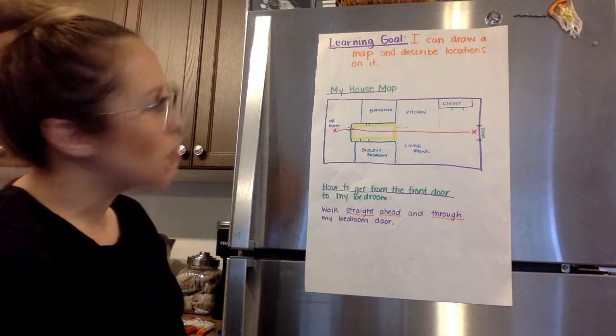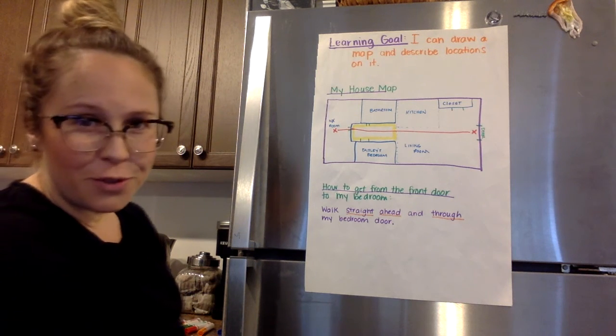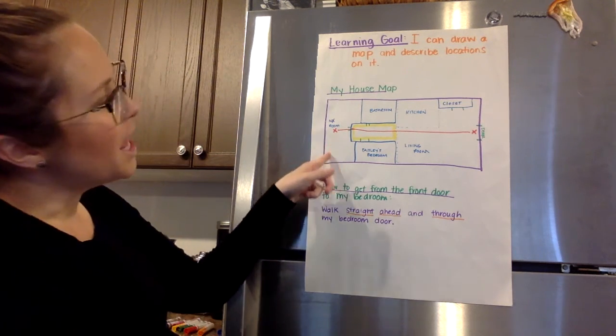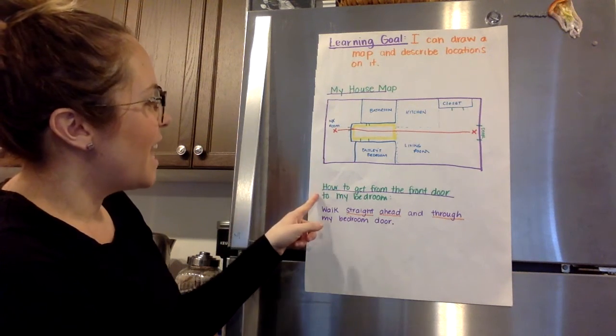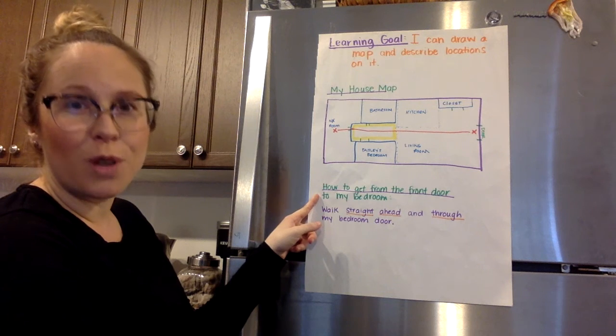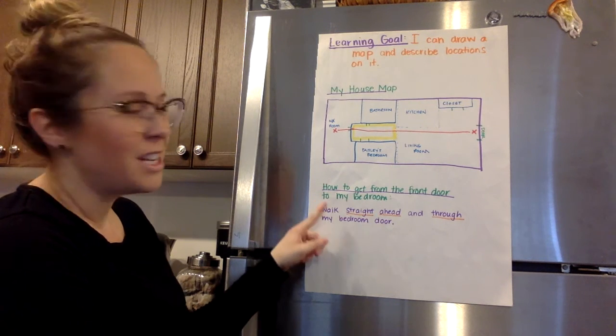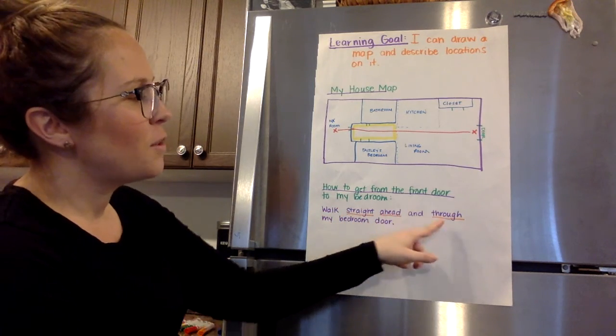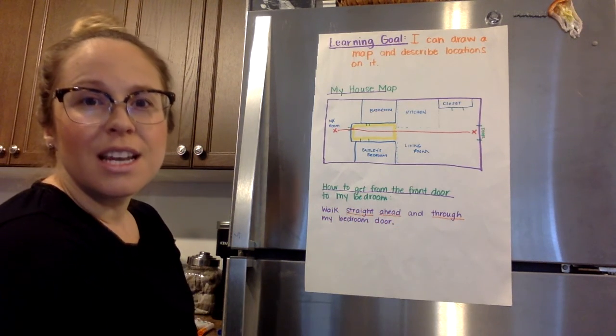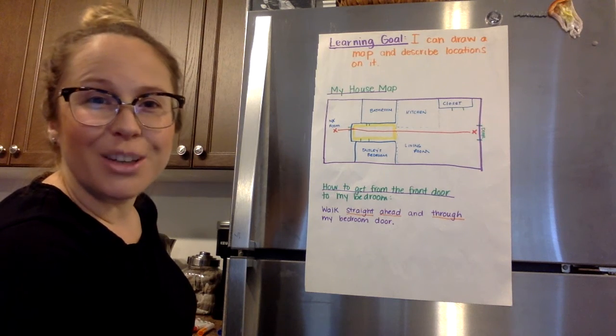Okay, so now your job is to do your computational fluency in your notebook, then draw your map of one of the floors of your home, and then tell me how to get from one spot to another spot in your house. Once you've written that down, I want you to underline all of the positional language words that were in your sentence.